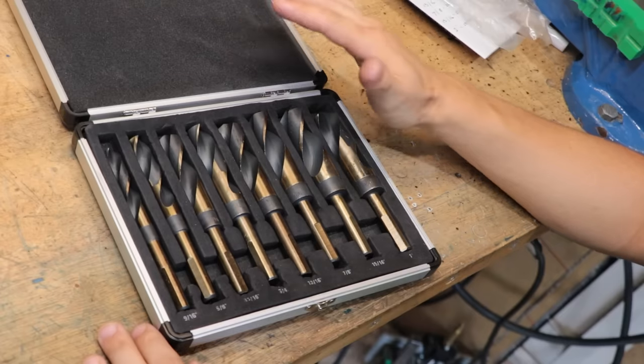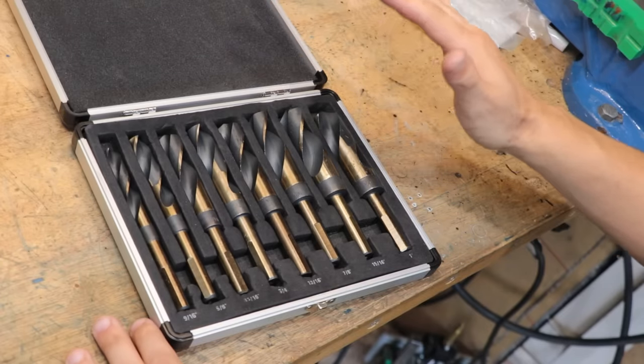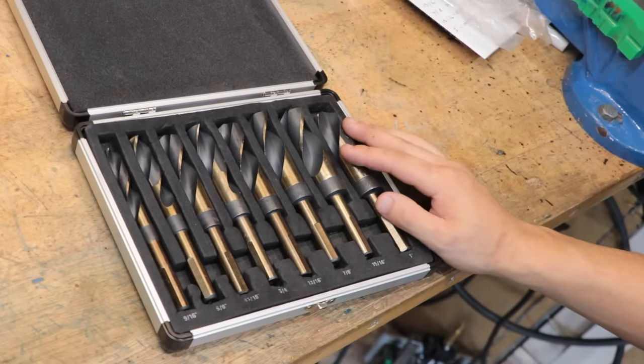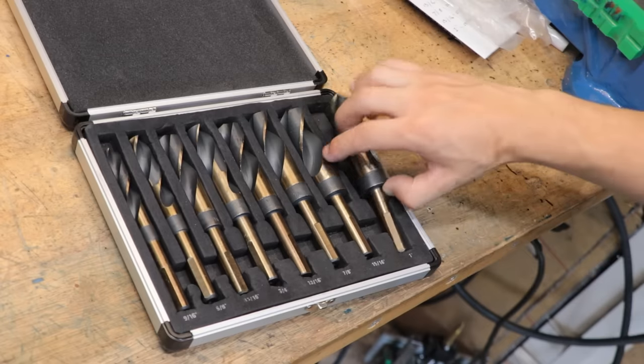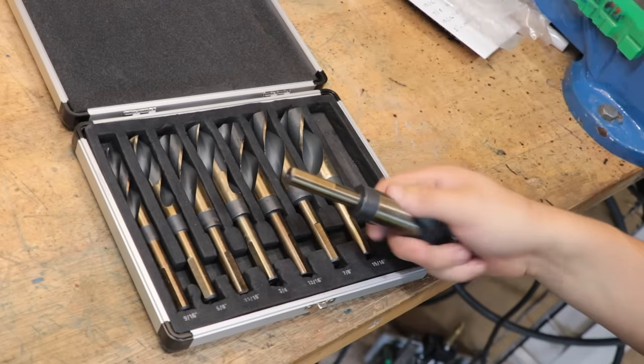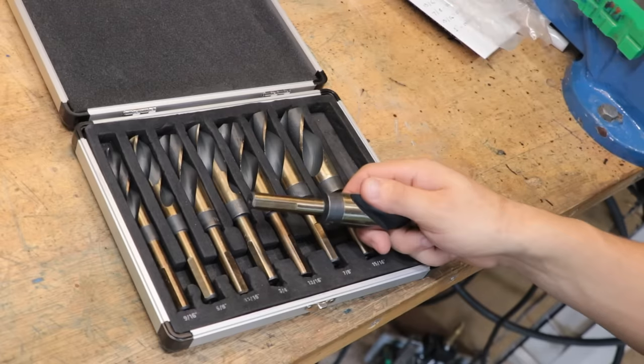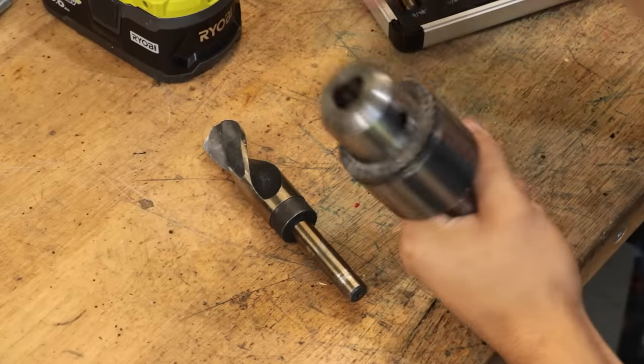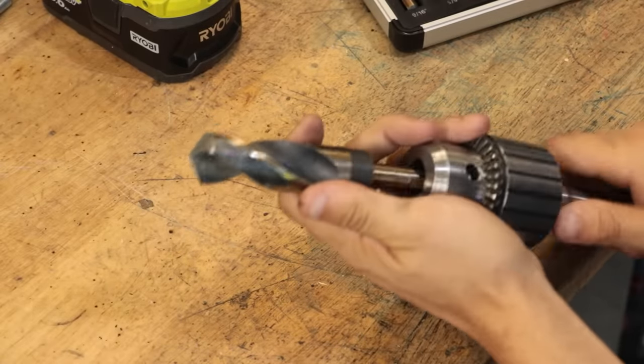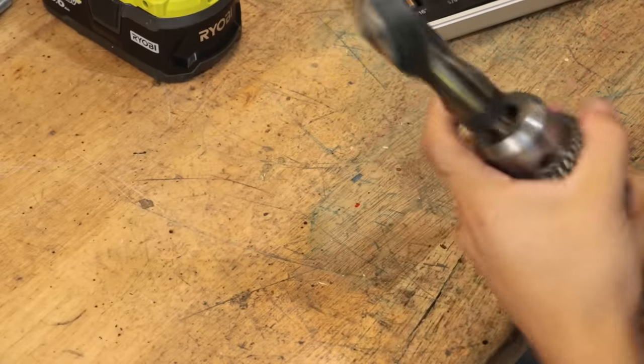So, as I was saying before, this is a set of reduced shank drill bits, and the reason why I bought them is, well, because you can use them in most drill chucks. For example, this is a one inch drill, what's that, roughly 25 and a half millimeters, and I don't think any normal chuck could hold that, but since the shank is half an inch or so, it can.